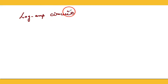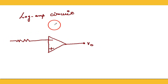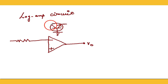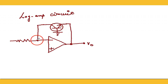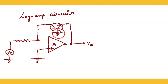Today we will discuss the Log Amplifier. The Log Amplifier gives us an output voltage which is the logarithm of the input voltage. The input voltage is applied to the inverting terminal, and in the feedback path a transistor is used. The emitter of the transistor is connected to the output and the collector is connected to the inverting terminal. The input signal is also connected to the inverting terminal and the non-inverting terminal is grounded, making it an inverting op-amp configuration.